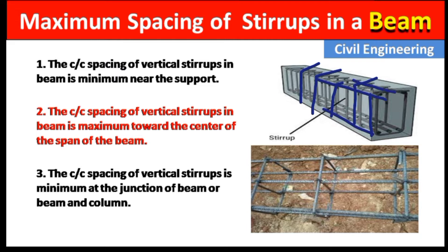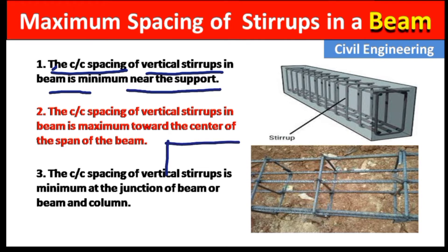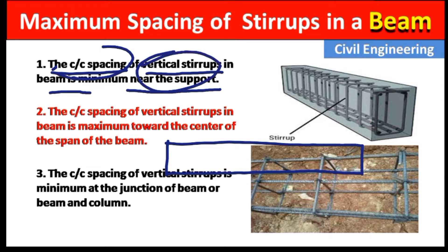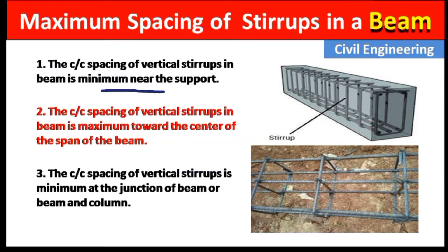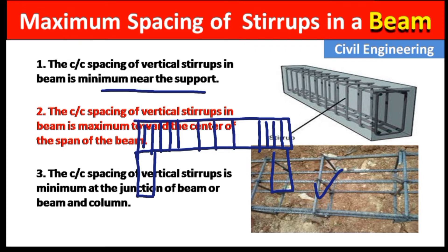Let us see the different factors for the spacing of stirrups. Point one: the center-to-center spacing of vertical stirrups in a beam is minimum near the support. If we have a beam with supports at both ends, the spacing of stirrups will be minimum at the support sides, but maximum at the center.